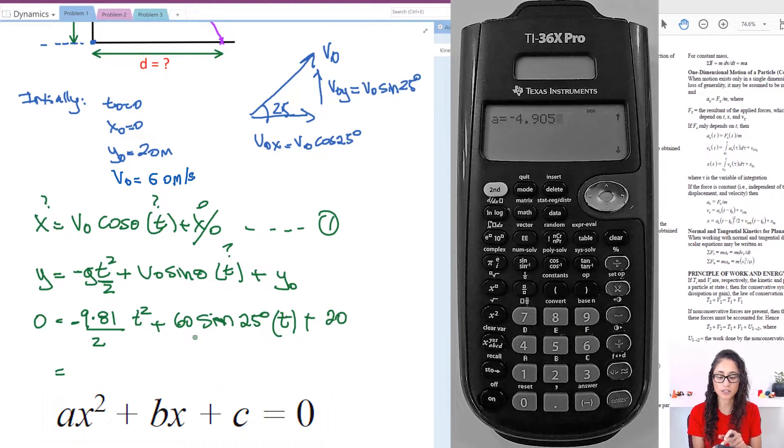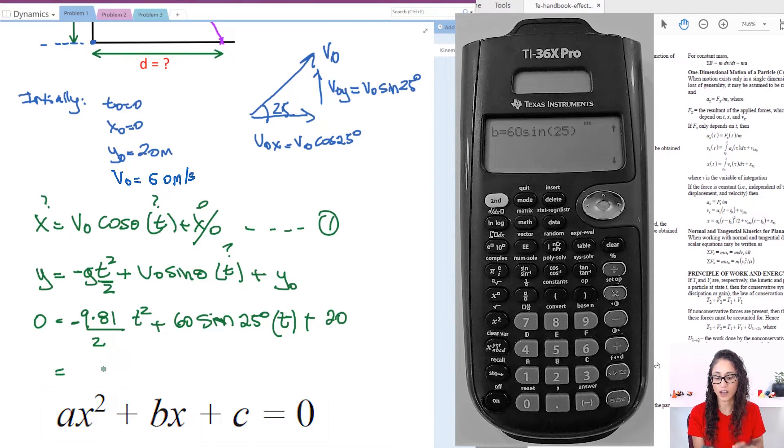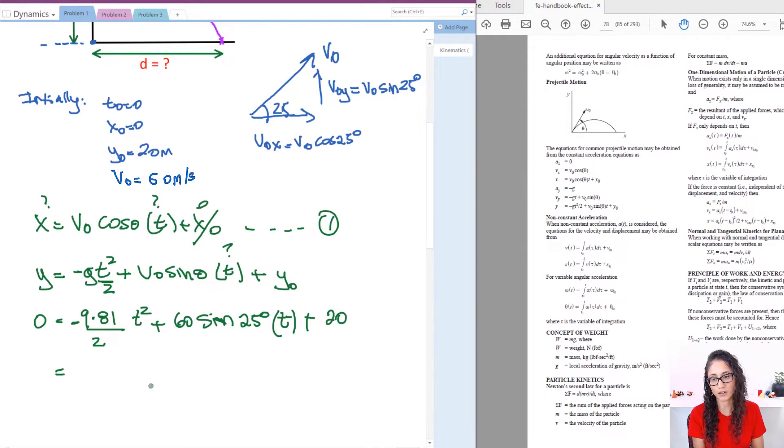And then there, it gives you a, you have to give them this term. So this is your term a. So you're going to write minus 4.905. And then you're going to press enter. And then you have b, which is this term, that's your b, because this equation, it has to be this way. So we have ax squared plus bx plus c. So make sure you enter the right terms. And don't forget negative in the first term a.